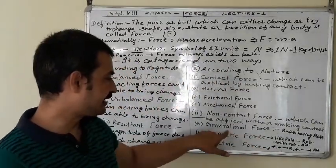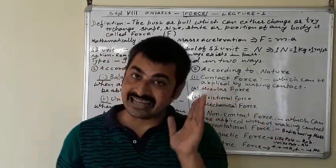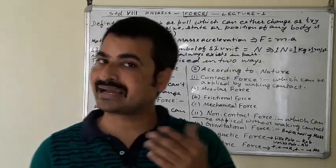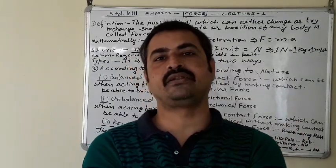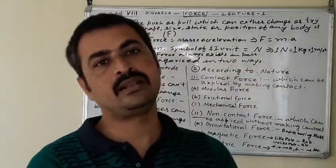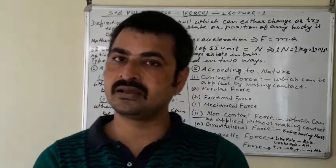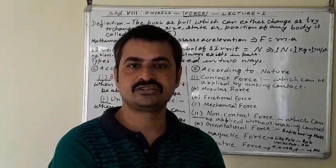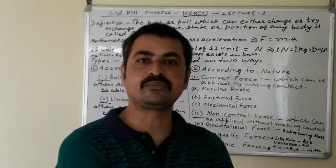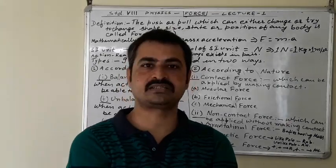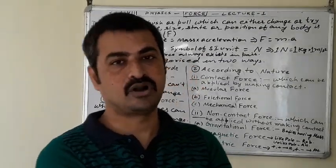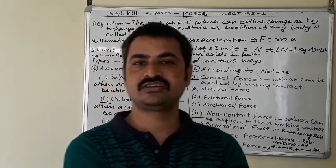Gravitational force acts between bodies having mass and is always attractive in nature. The second non-contact force is magnetic force — the force acting between magnets or between a magnet and a magnetic material. Like poles of two magnets repel each other, while unlike poles attract. So magnetic force has both natures: force of attraction and force of repulsion.